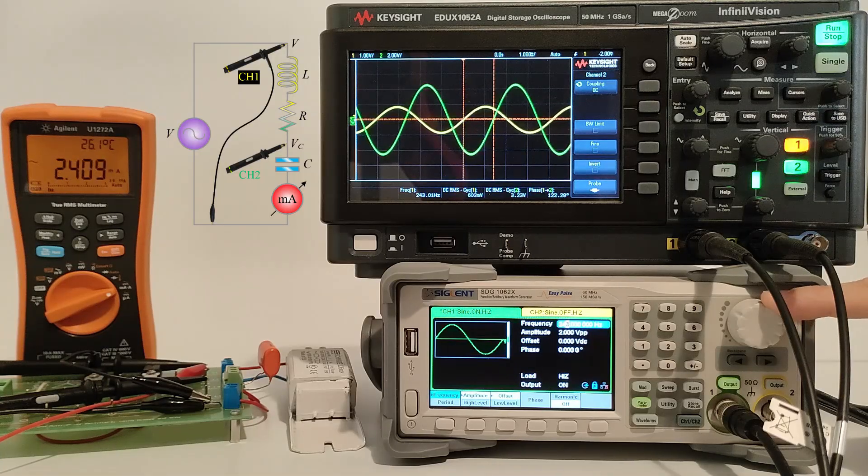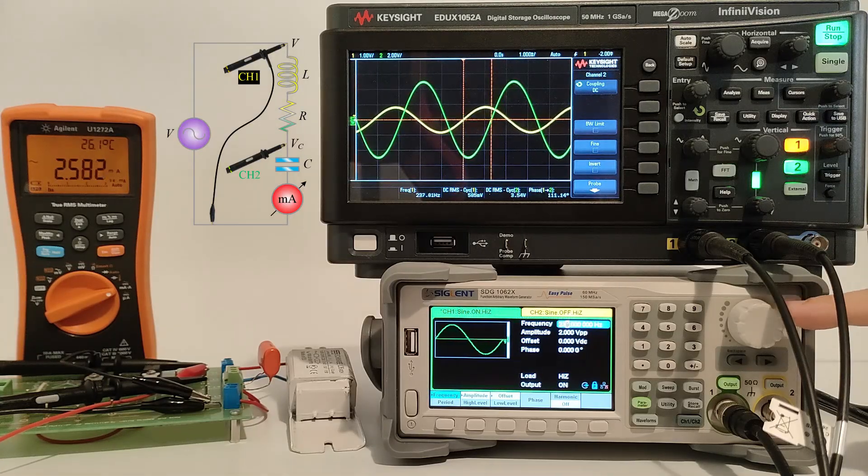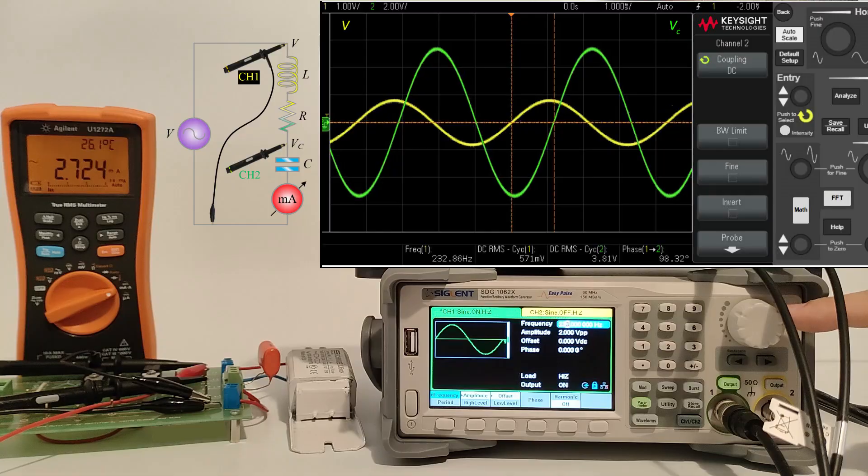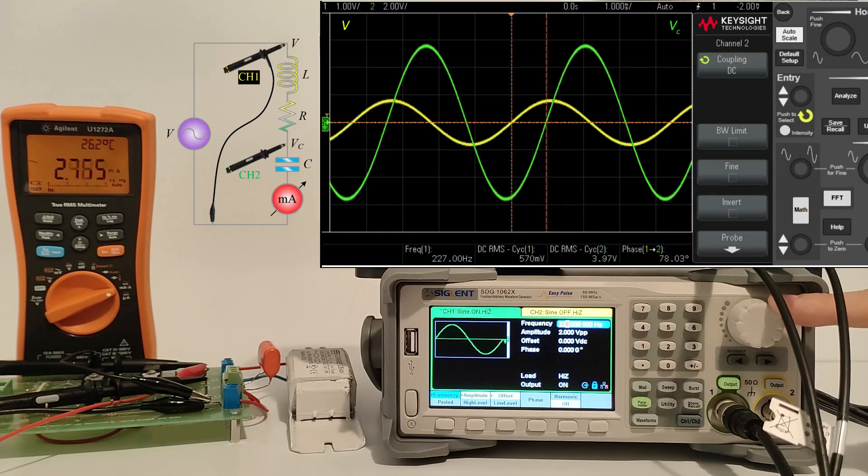By increasing the voltage from the function generator to 2 volts peak to peak, we notice that the circuit no longer works in resonance, which was not expected.